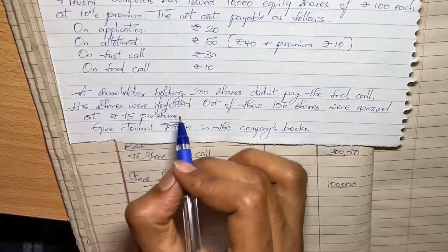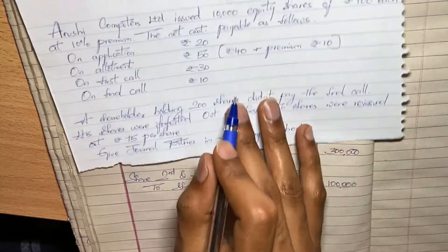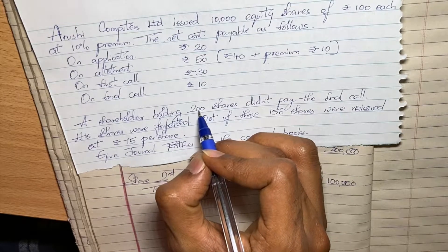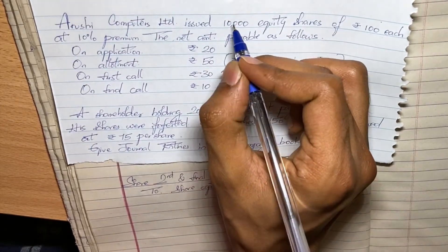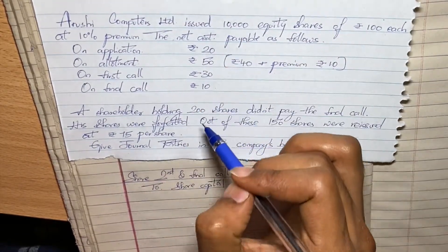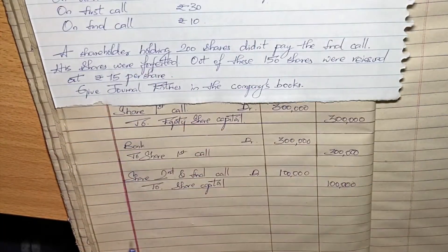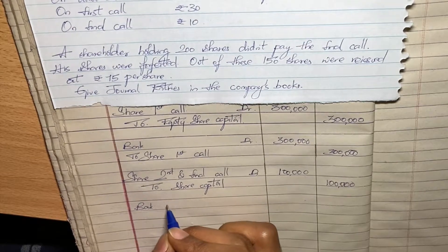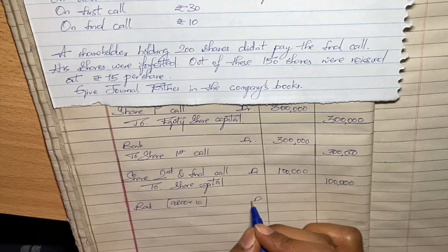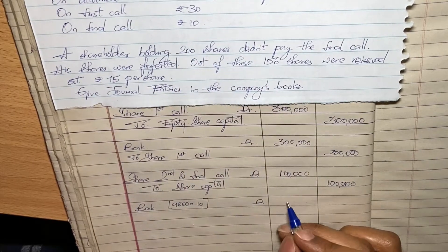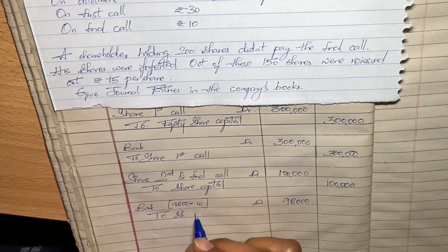The problem says a shareholder holding 200 shares didn't pay the final call and his shares were forfeited. That means for the remaining 9,800 shares (10,000 minus 200), the final call was paid. So bank account is debited with 9,800 into 10, which is 98,000, and share second and final call account is credited.